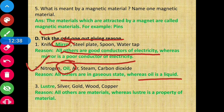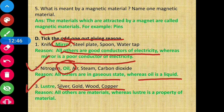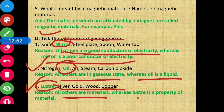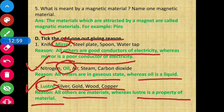Question number 3: Lustre, silver, gold, wood, copper. The odd one out is lustre. Reason: All others are materials, whereas lustre is a property of a material, not a material itself.